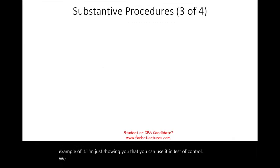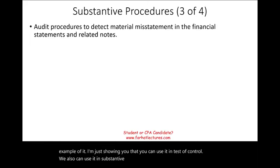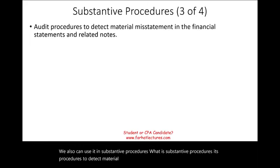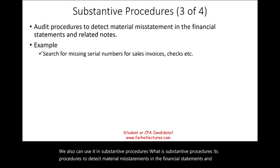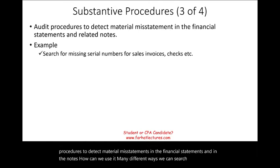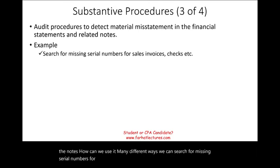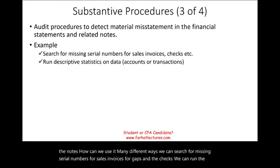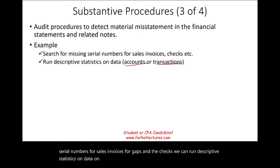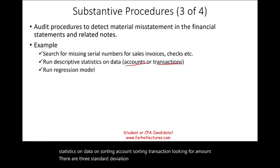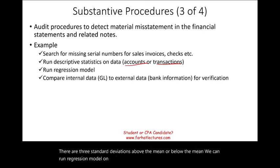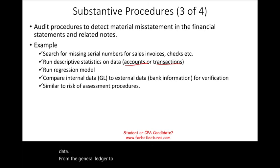We can also use ADA in substantive procedures — procedures to detect material misstatements in the financial statements and notes. There are many ways to do this: we can search for missing serial numbers on sales invoices or gaps in checks, run descriptive statistics on certain accounts or transactions looking for amounts three standard deviations above or below the mean, run regression models on different figures, and compare internal data from the general ledger to external data such as bank information.